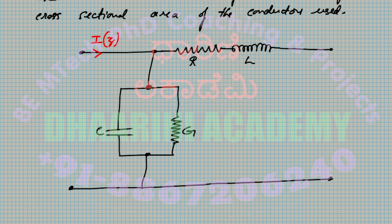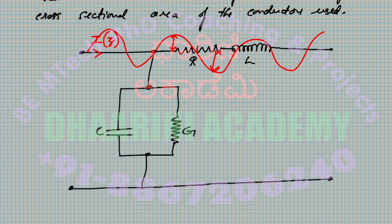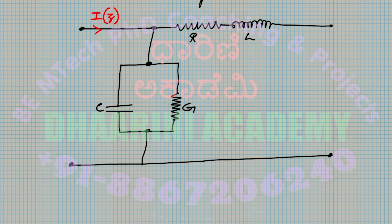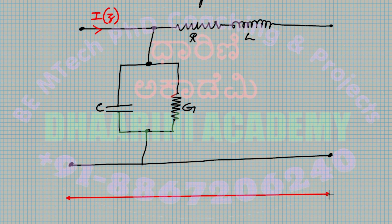The current at position z is I(z). After a small distance δz, the current changes to I(z + δz). Similarly, the voltage at z is V(z), and at z + δz it becomes V(z + δz). We consider a very small length δz of the transmission line.